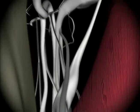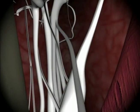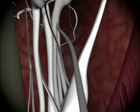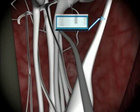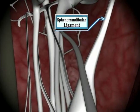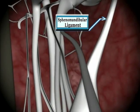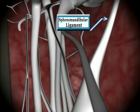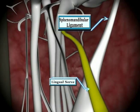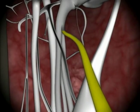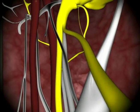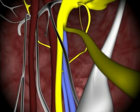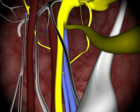Moving further in, we approach the sphenomandibular ligament, which should be to our right, or medial. We don't want to be lateral to the ligament, which could prevent diffusion of the anesthetic into our target, the inferior alveolar nerve. We're just about there — notice that we are approaching just above the lingual, and the inferior alveolar neurovascular bundle can be visualized.